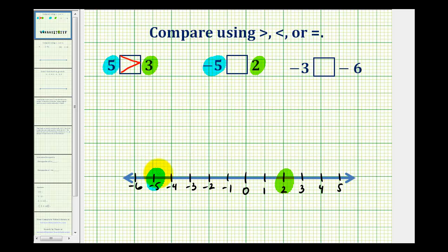Notice that negative 5 is to the left of positive 2, therefore it's smaller than positive 2, so we can say that negative 5 is less than positive 2. We can also read these in the opposite direction, meaning this is equivalent to 2 is greater than negative 5, reading from right to left.